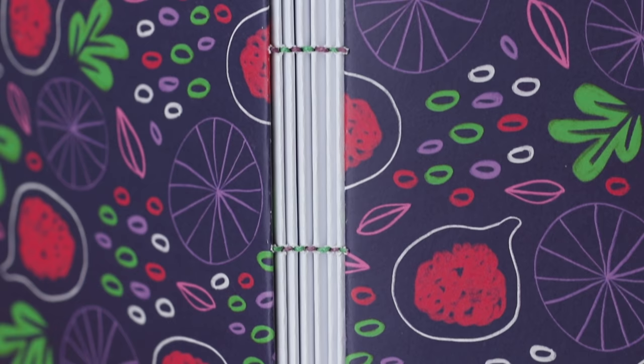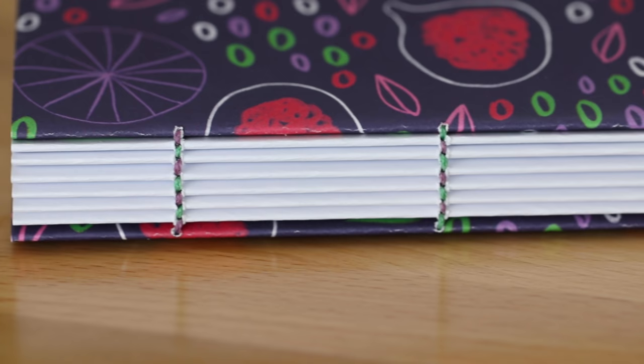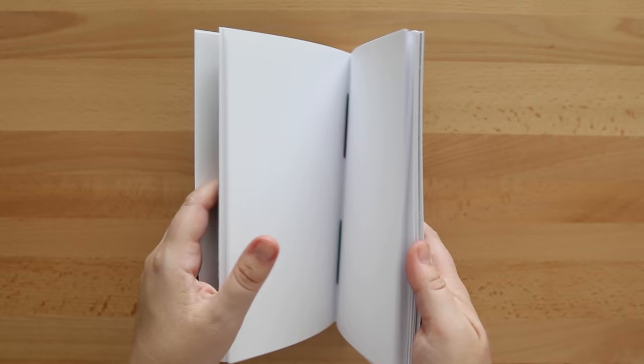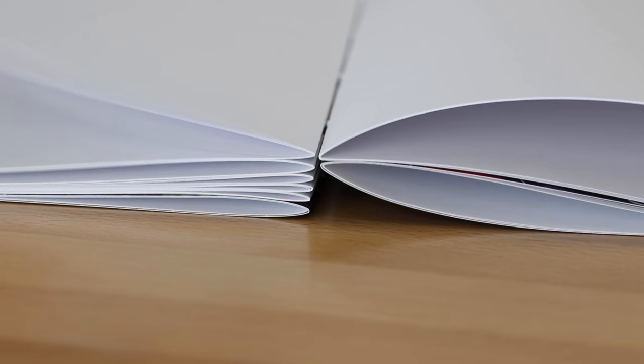I especially like the two colors, and you could use this in a combination with other two section methods. For example, using this with the two needle Coptic stitch, or this with a French link stitch. And like other exposed bindings, this does help your book lay completely flat if you open the pages all the way.